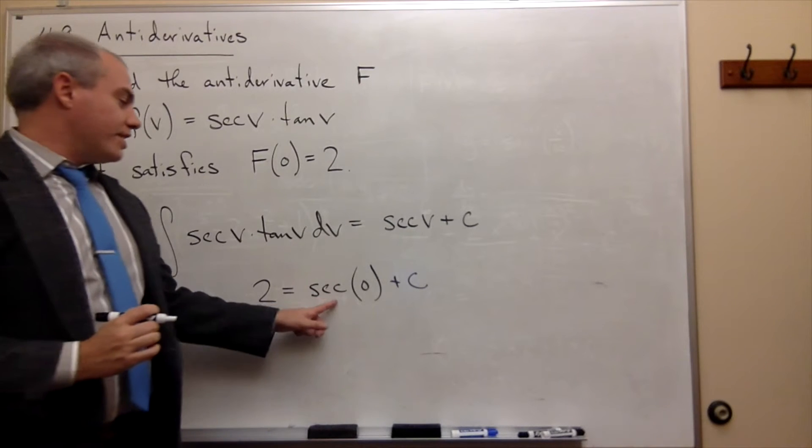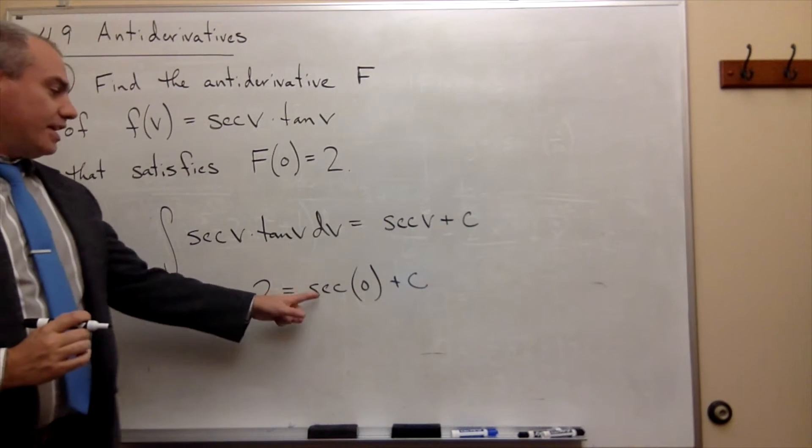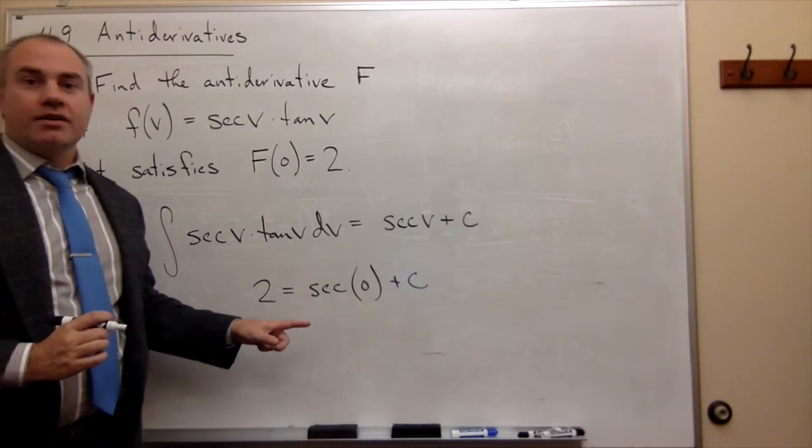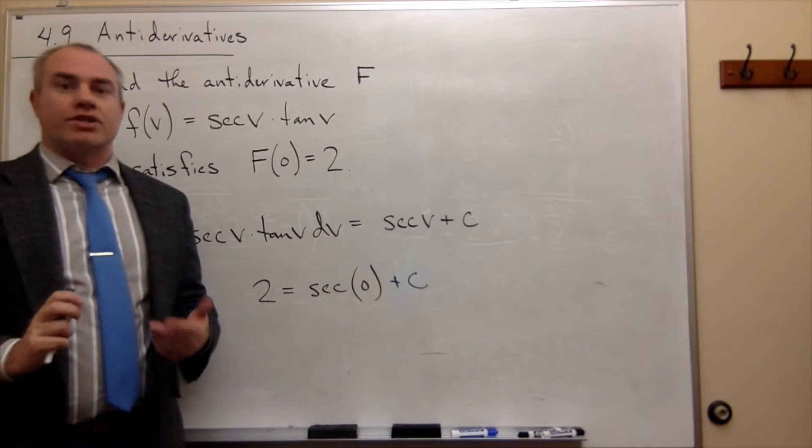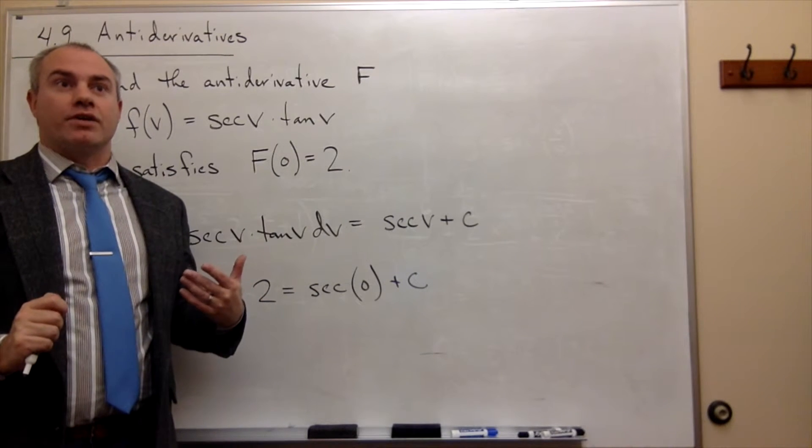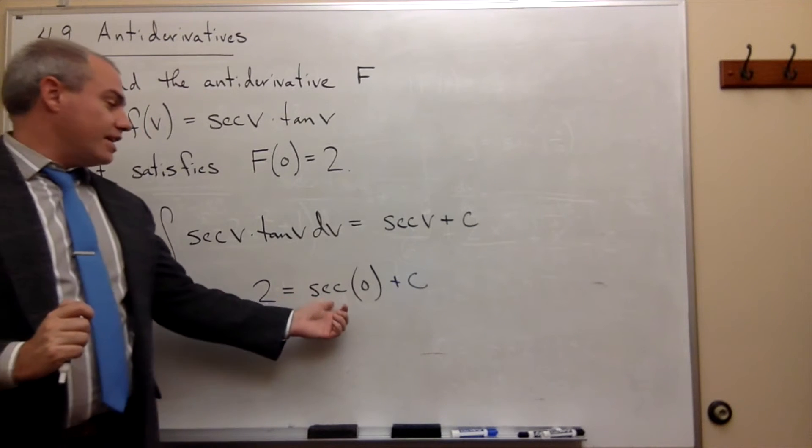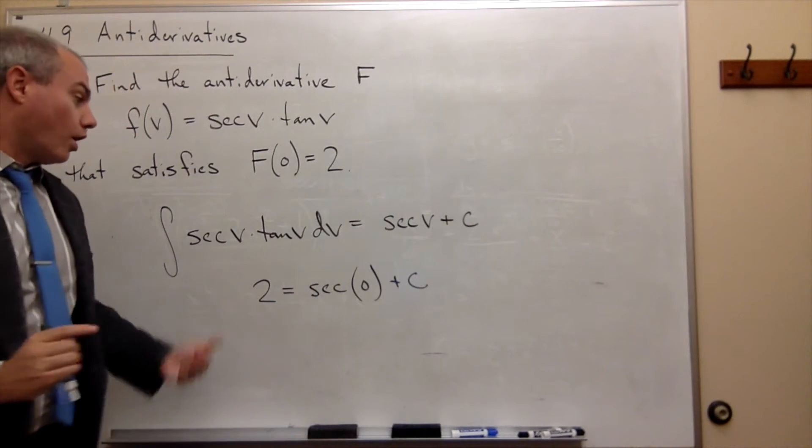Well, first of all, what is sec(0)? Secant is 1 over cosine. What's cos(0)? Cosine of 0 is 1, so sec(0) is also 1.